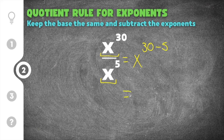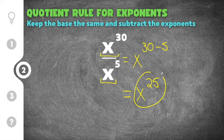We can simplify x to the 30th minus 5. So we keep the base of x, which we know we have to do, and then we're going to subtract the exponents. 30 minus 5 is 25, so our solution is x to the 25th power.